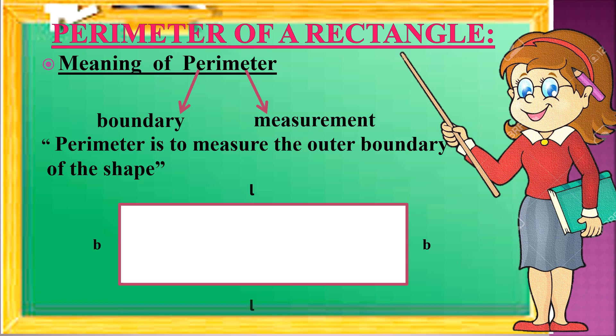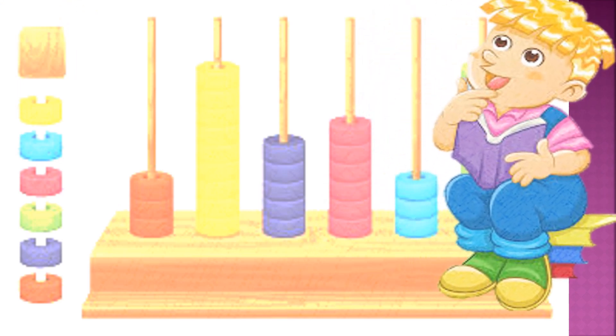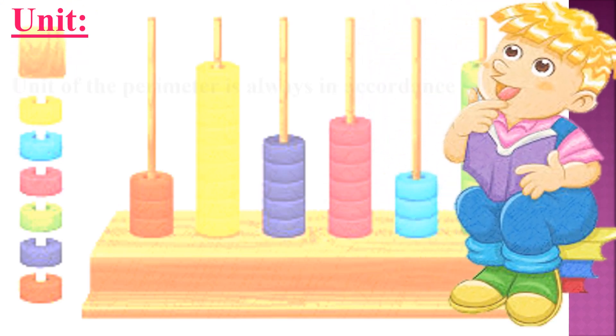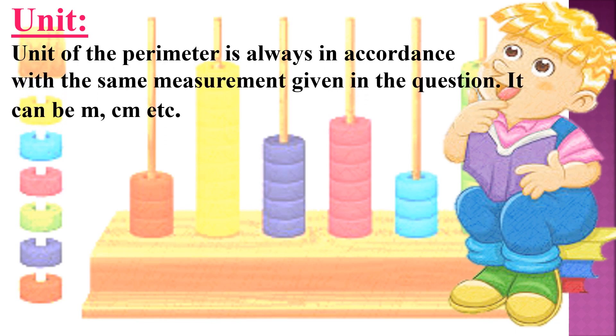We name the sides as length and breadth. L stands for length — L is the horizontal part of the shape. B stands for breadth — breadth is the vertical part of the shape. The unit of perimeter is always in accordance with the same measurement given in the question. It can be meter, centimeter, etc.